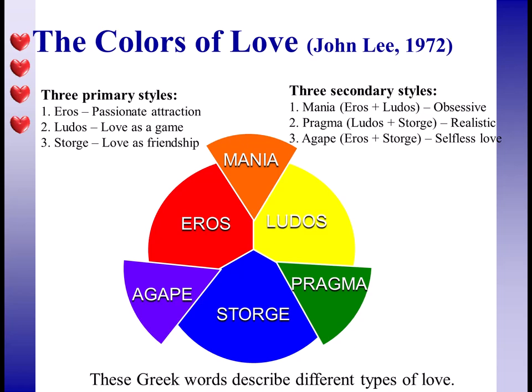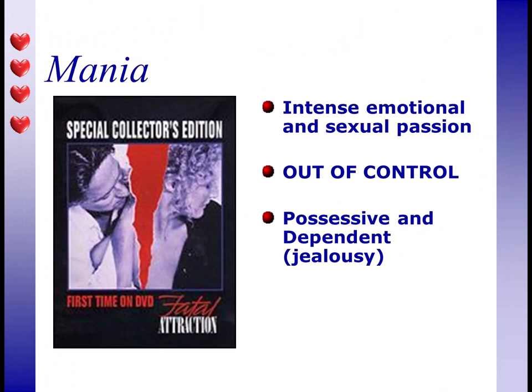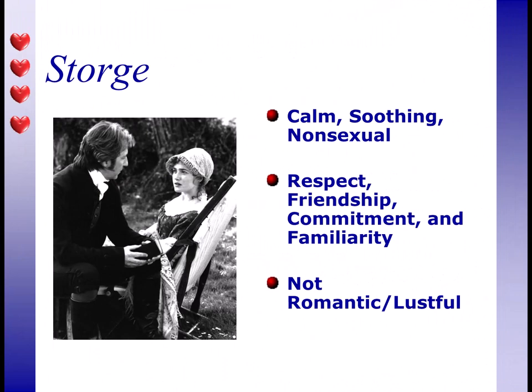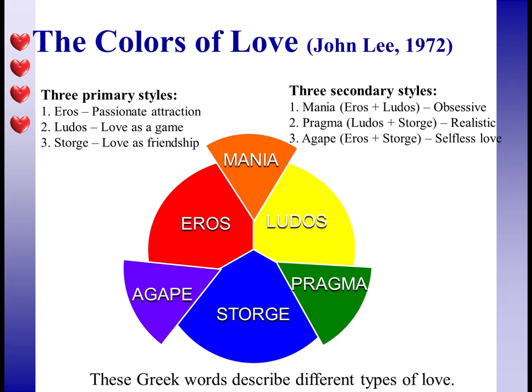Mania is placed on the color wheel between eros and ludus, because when you combine eros and ludus you get mania — intense emotional and sexual passion so intense that it's out of control. Someone who's crazy jealous might be thought of as a manic lover. The third primary concept is storge, which is different from eros in that it's not romantic, and different from ludus in that it's not lustful. It's a calm, soothing, non-sexual type of love characterized by respect, friendship, commitment, and familiarity.